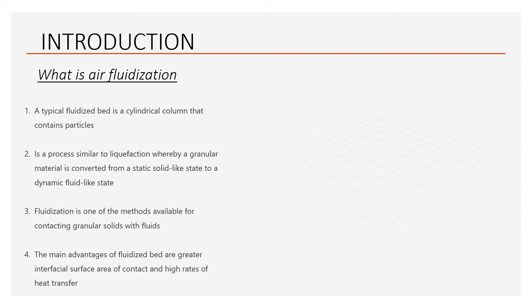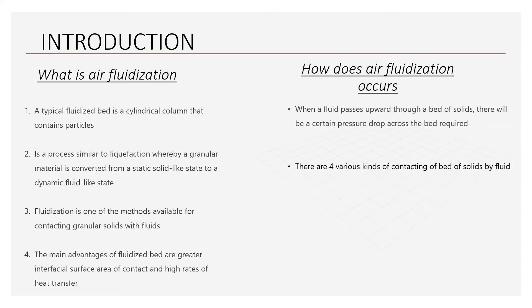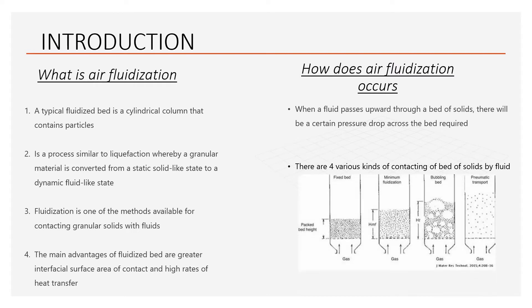Now let's see how air fluidization occurs. This starts when a fluid passes upward through a bed of solids — there will be a certain pressure drop across the bed required to maintain the fluid flow. Depending upon the bed geometry and particle characteristics, the following phenomena occur with gradual increase in fluid velocity. There are four various phenomena, or kinds of contacting of solids swept by fluid, as we can see from the diagram.